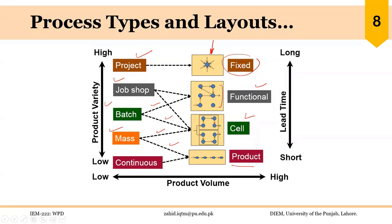Mass processes or assembly lines use either a cellular layout or a product layout, and continuous processes always use product layout. In the fixed position layout, material, resources, and labor move toward the product. In the functional layout, machines and equipment are grouped together according to similar functions. In cellular layout, cells are made and each cell is dedicated to a specific product. In product layout, there is a serial flow of material from one end to the other.